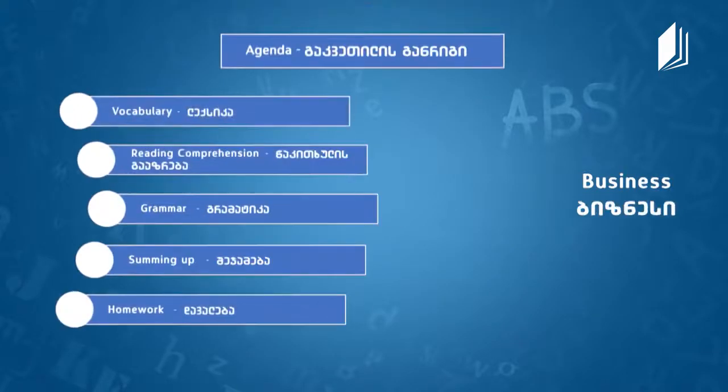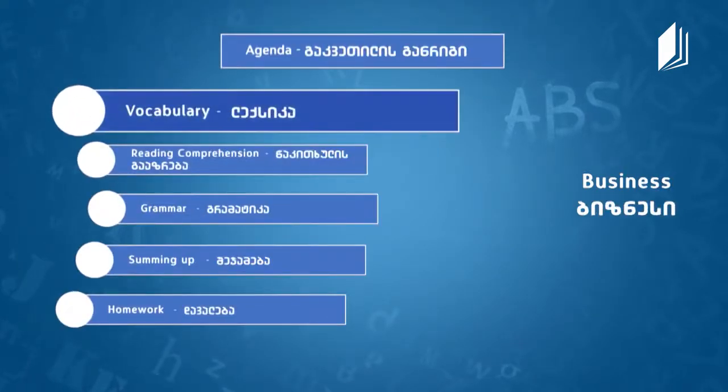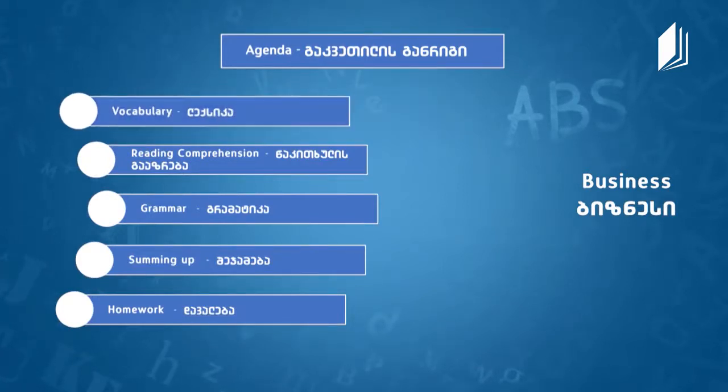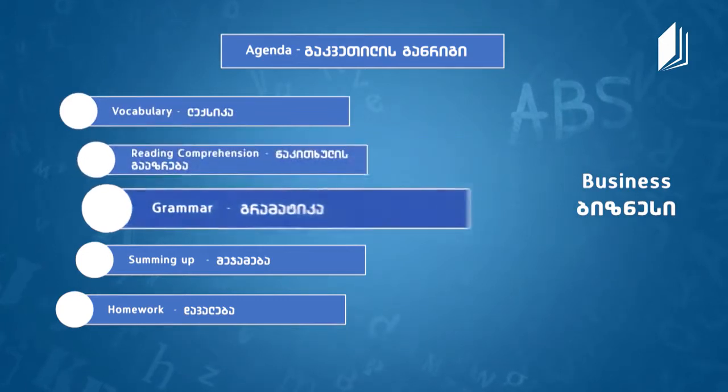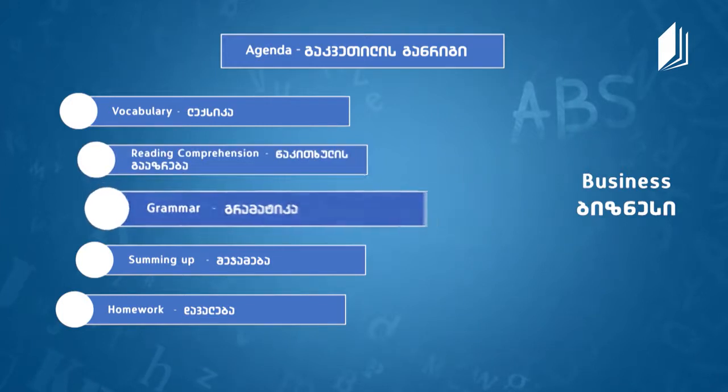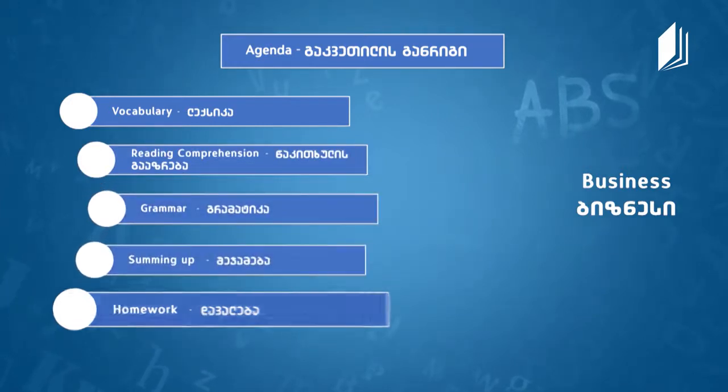A very interesting topic. We've talked about business in previous lessons and we're going to add some more interesting things today. But before we move on to the lesson, we have to look at our agenda. We often start off with an introduction and a short discussion about topics related to business, then move on to vocabulary — a list of words you'll need for the world of business and for our reading text as well.